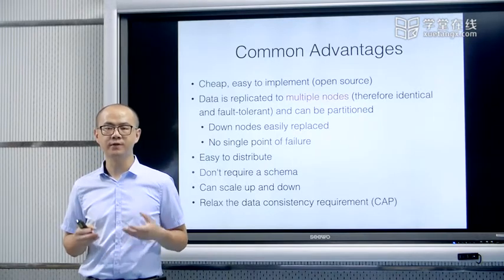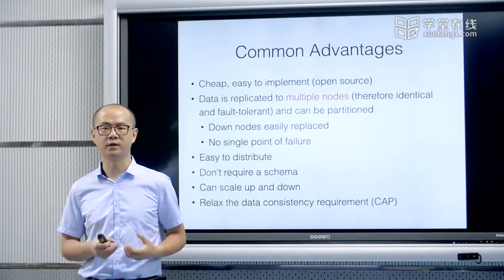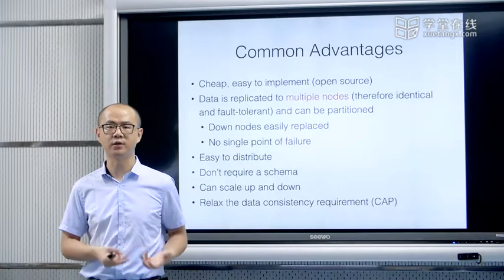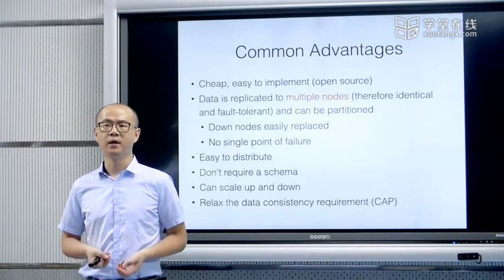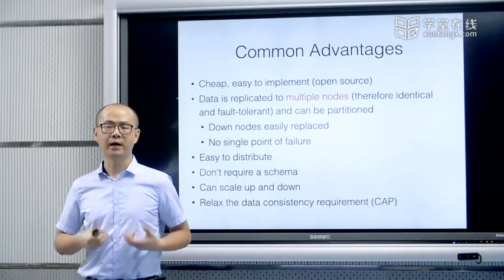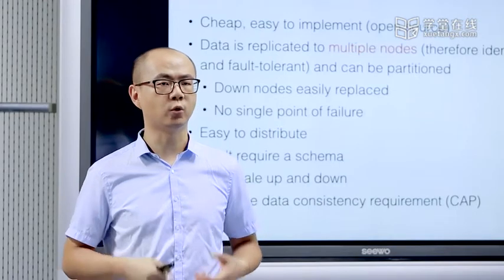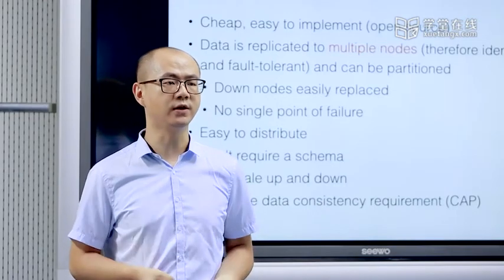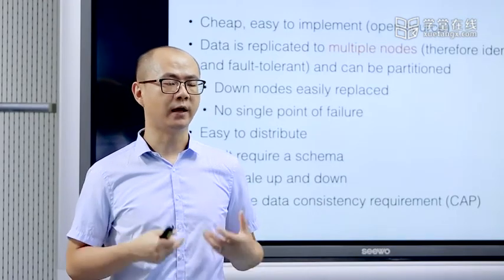这也是由底层的分布式文件系统，底层的数据处理平台MapReduce或者Spark所决定的，它有一定的可分布性能。我们之前说到在MapReduce或者分布式文件系统HDFS中，整个系统的可扩展性实际上是一个scale-out的模式，也就是说当添加新的服务器、新的硬件设备之后，它的scalability能够得到相应的扩大。